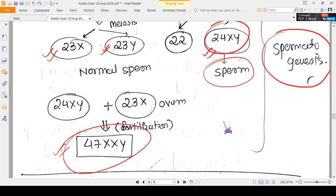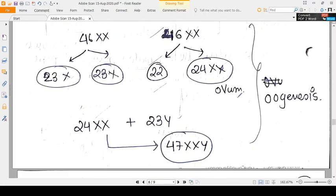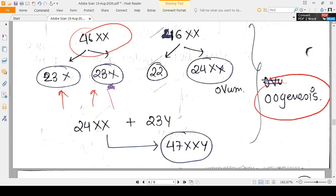If a different scenario occurs in oogenesis, the 46 XX is the basic chromosome number and it converts into two sets of chromosomes of 23 X and 23 X. One of these chromosomes becomes a Barr body and one chromosome will stay as an ovum.